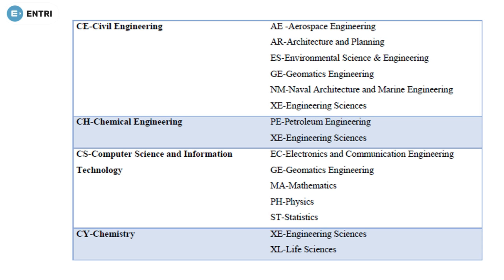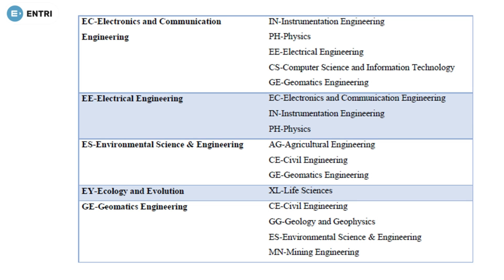If you are from a Chemistry background, you can attend two papers: Engineering Sciences and Life Sciences. If you are from Electronics and Communication Engineering, you can attend: Instrumentation Engineering, Physics, Electrical Engineering, Computer Science and Information Technology, and Geomatic Engineering. If you are from the Electrical Engineering department, you can obtain three papers: Electronics and Communication Engineering, Instrumentation Engineering, and Physics. If you are from Environmental Science and Engineering, you can attend three papers: Agriculture Engineering, Civil Engineering, and Geomatic Engineering.